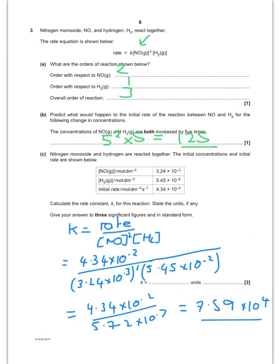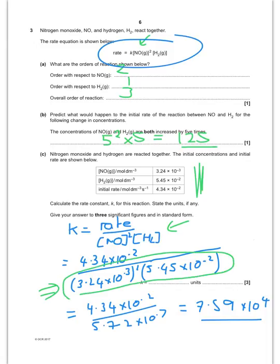OK. Nitrogen monoxide and hydrogen are reacted together, and they've given us the information here. Calculate the rate constant. So we've basically got to rearrange this expression here to give us this here. We then input the numbers.